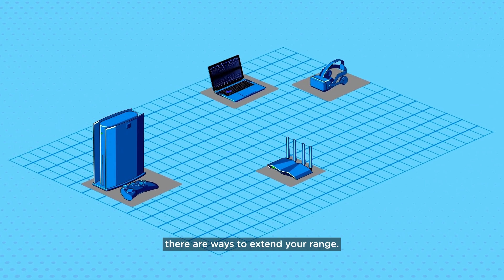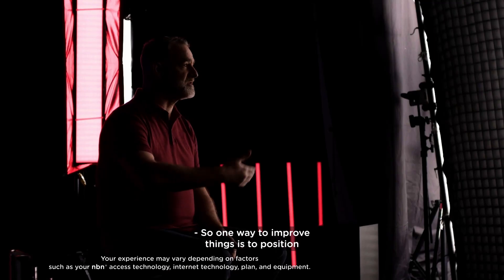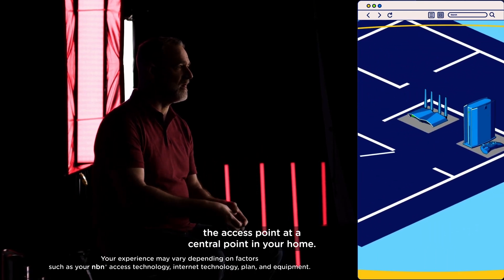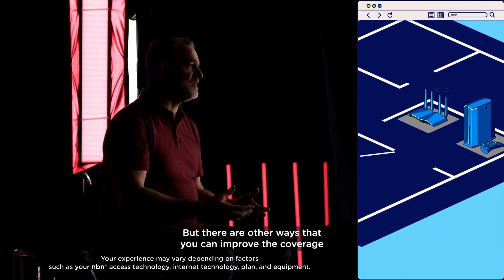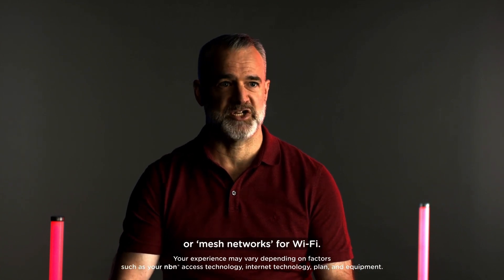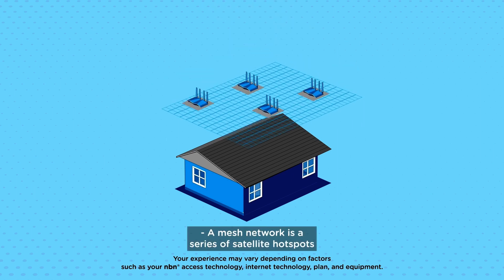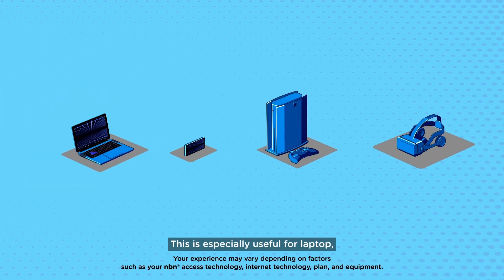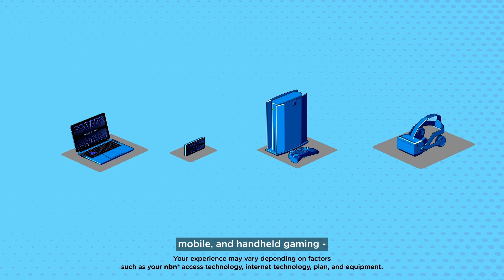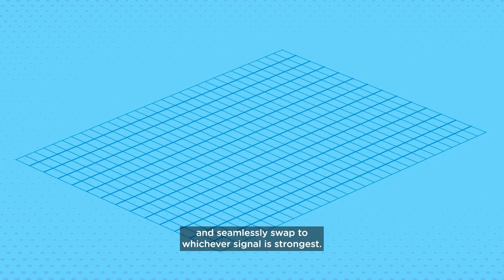If you really want to supercharge your connection, there are ways to extend your range. One way to improve things is to position the access point at a central point in your home, but there are other ways to improve coverage as well, through things like repeaters or mesh networks for Wi-Fi. A mesh network is a series of satellite hotspots which link up to a hub to create mass coverage. This is especially useful for laptop, mobile, and handheld gaming because it lets you walk around your house and seamlessly swap to whichever signal is strongest.